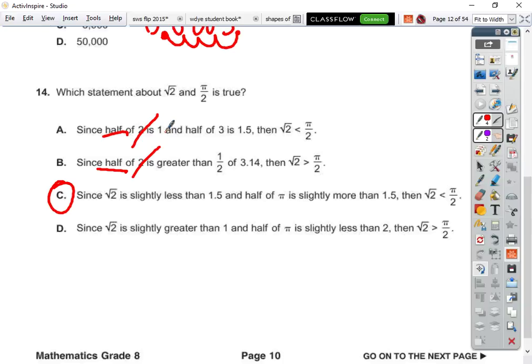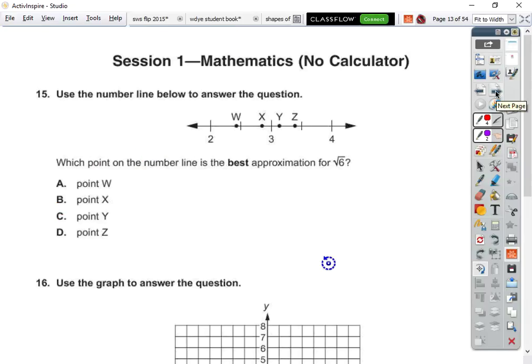And we know that pi is 3.14, which is not slightly less than 2. Anyways, it hasn't switched around anyways. So this right there would be enough to know that it can't be right. All right, 15. Use a number line to answer the question. Which point on the number line is the best approximation for the square root of six?